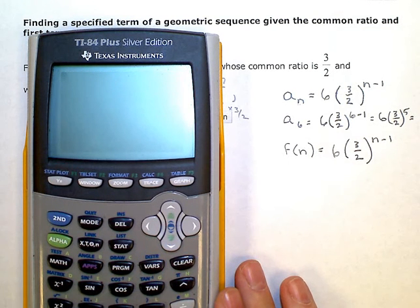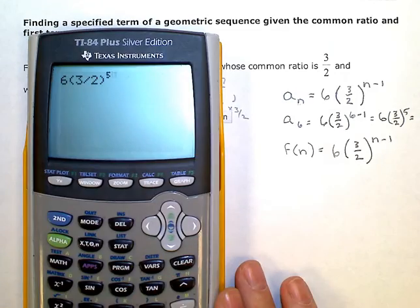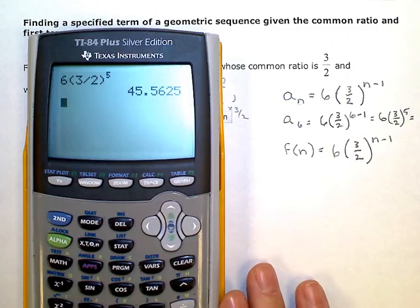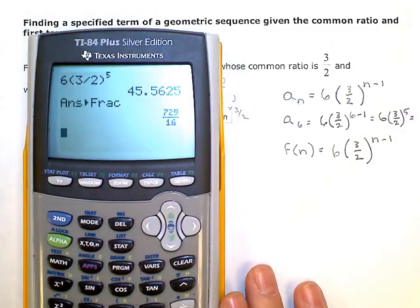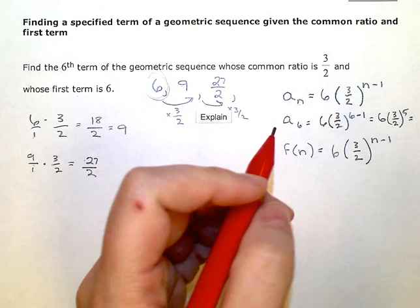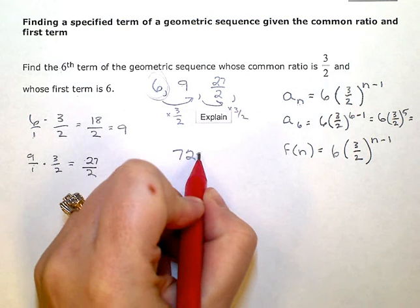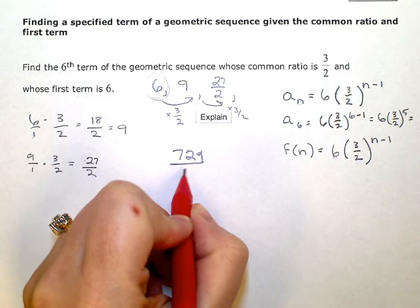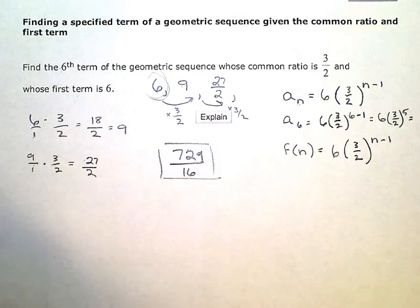So six times three halves, and I'm going to raise it to the fifth power. Gives me that. I'm going to change it back to a fraction. So 729 divided by 16. So my answer is 729 divided by 16, kind of a crazy fraction there. And that's it.